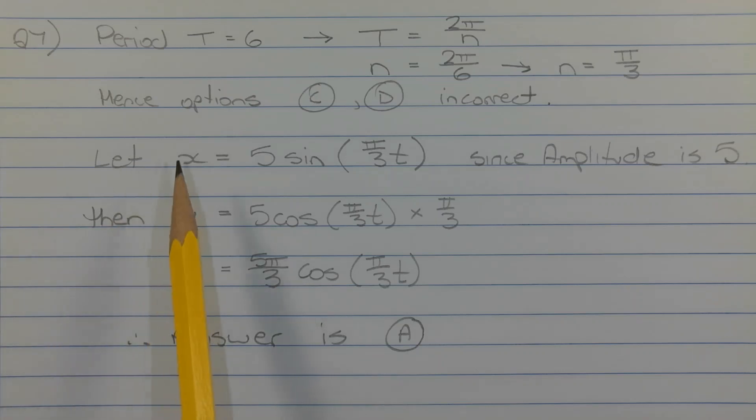Differentiating x with respect to t using the chain rule, we get velocity v equals 5 times cosine of π over 3 times t, times the derivative of π over 3 times t, which is π over 3. Putting that together, velocity v equals 5π over 3 times cosine of π over 3 times t. Therefore, the correct answer is option A.